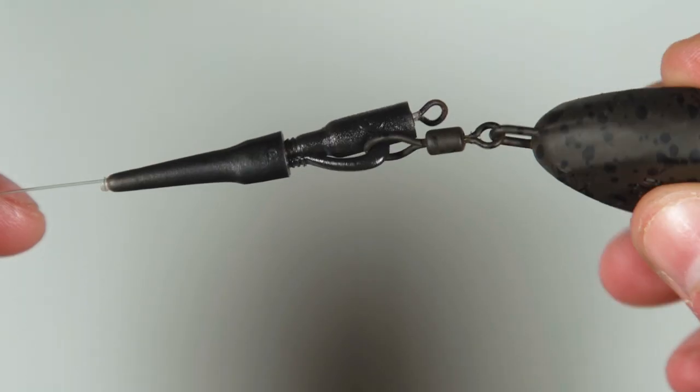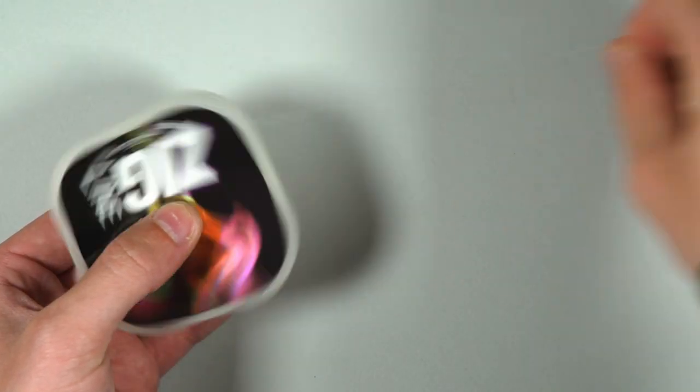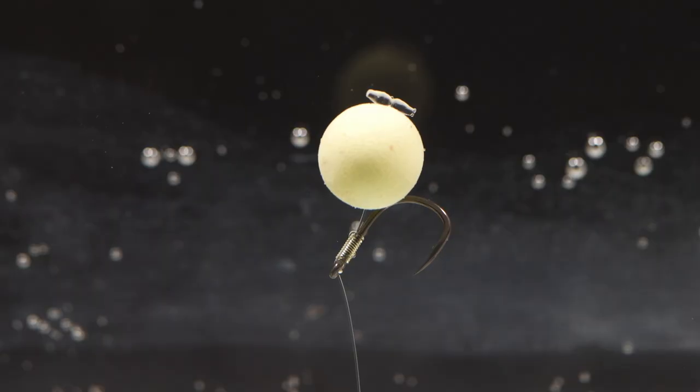You've now made up the lead system so next all you need to do is tie up the actual hook link section. Take off your chosen length of zig line. I'm going to just use a short length for demonstrational purposes.